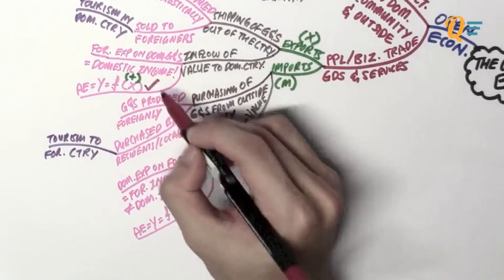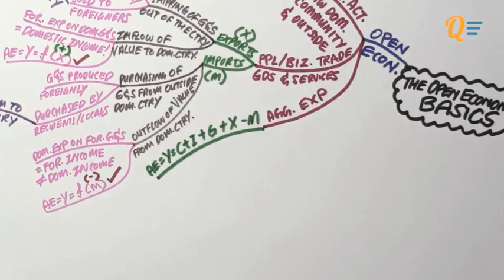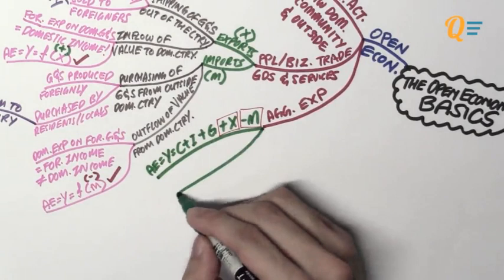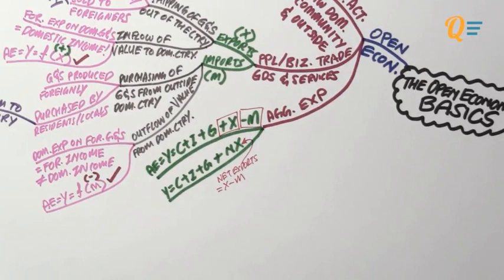Knowing these two pieces of information, what can we say about the aggregate expenditure equation? The AE equation is simply: AE equals Y equals C plus I plus G plus X minus M. What we can do with plus X and minus M is sum it into NX, which stands for net exports. So your net exports is simply X minus M — net exports is the net of the exports.